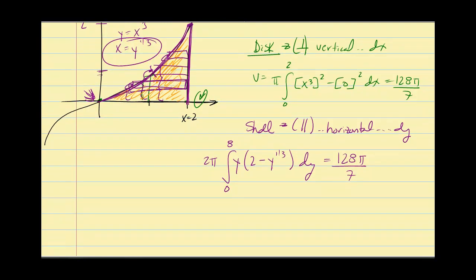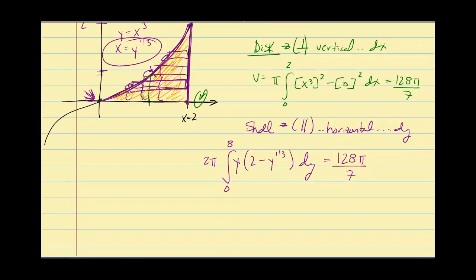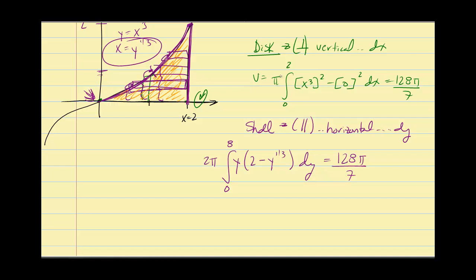I would spend some time verifying the integration. Now let's do the exact same graph — y = x³, y = 0, x = 2 — except this time rotating about the y-axis instead of the x-axis. When we have a simple function like y = x³, I can solve for x by taking the cube root of each side.